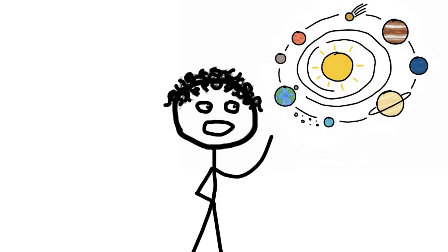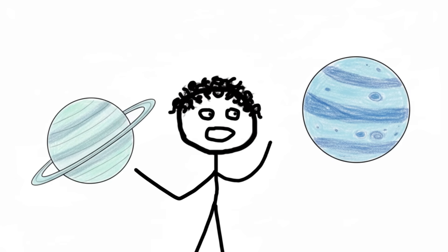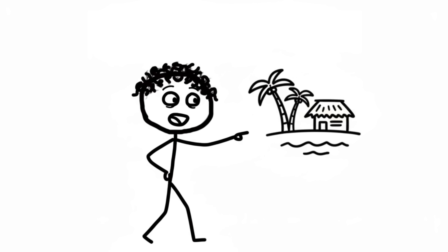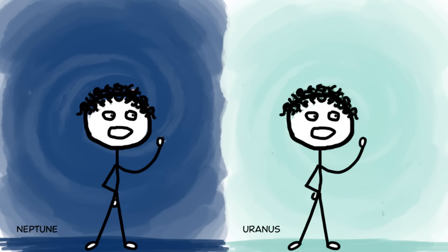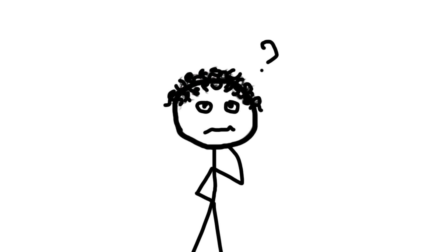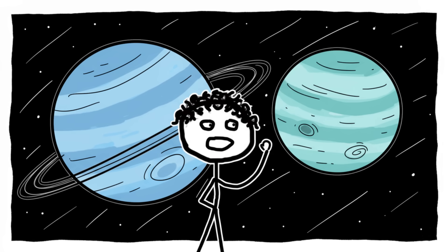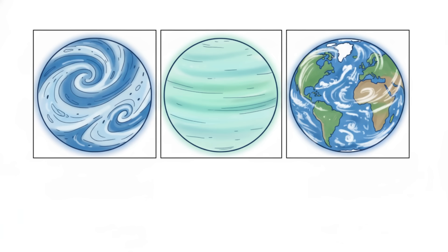Number six, diamond rain. If you're looking for an exotic vacation spot, might I suggest the giant ice planets of our outer solar system: Neptune and Uranus. Forget the beaches. Here you can experience a meteorological phenomenon that puts a dreary drizzle to shame: diamond rain. Yes, you heard that right.